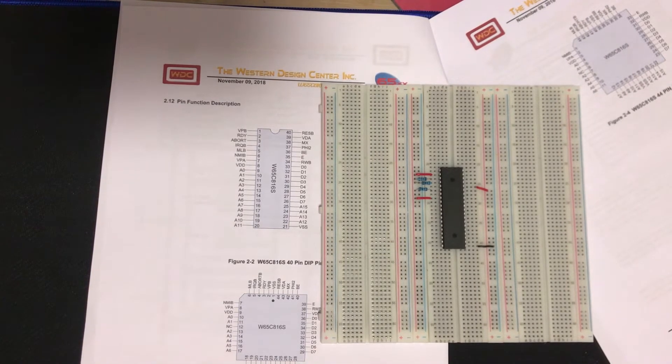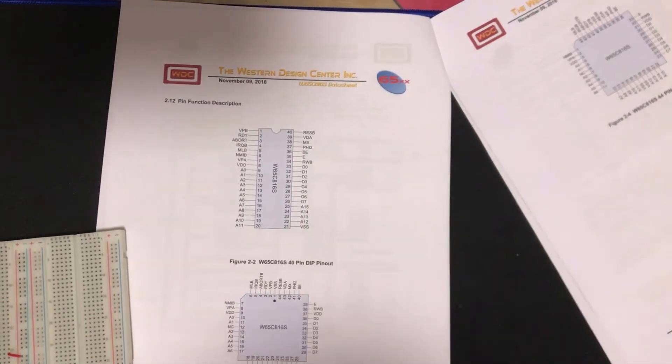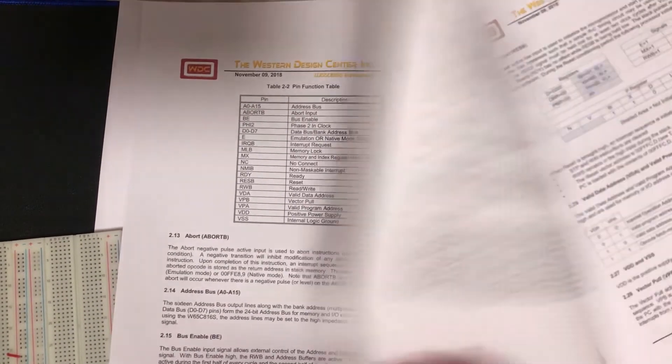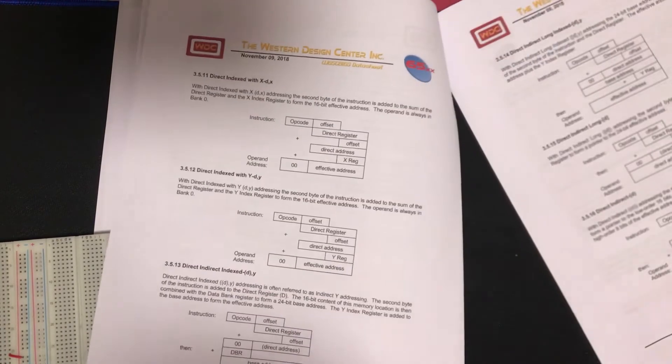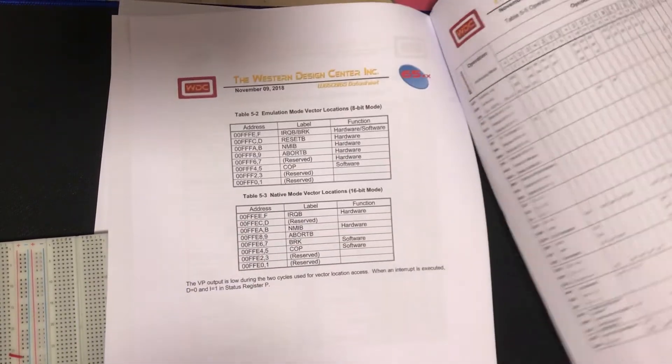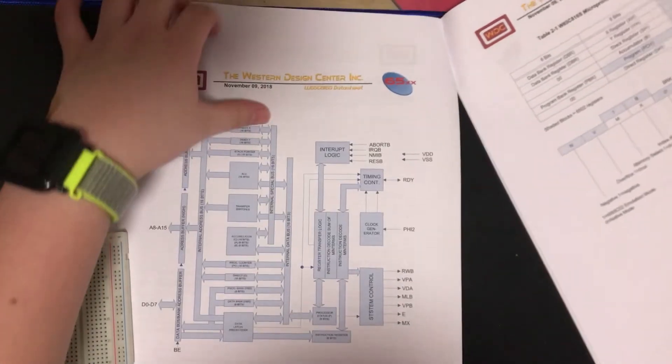The next pin is MX. This is actually a multiplex of two flags in the processor programming model. So this is the M and X flags, which can be found, let's see which page of the data sheet. Two hours later, right here.